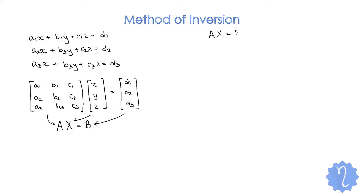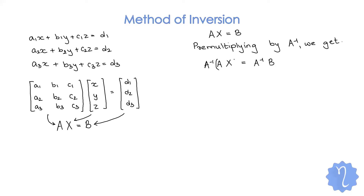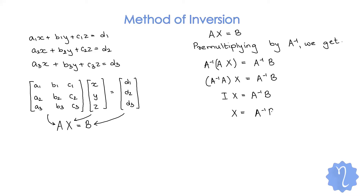Right now we have AX = B. Pre-multiplying by A⁻¹ we get: A⁻¹ · A · X = A⁻¹ · B. Pre-multiplying is necessary — if we post-multiply, we multiply from the right-hand side, but here we multiply from the left-hand side. Since A⁻¹ · A = I, this becomes I · X = A⁻¹ · B, therefore X = A⁻¹ · B.